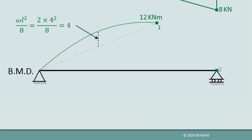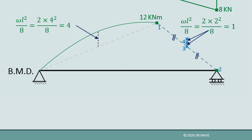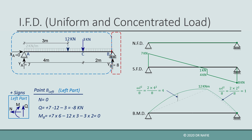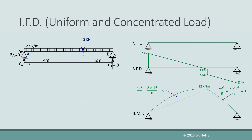Next, we connect the moment at point C with zero at point B using a parabola in the same way as detailed previously. The value of WL²/8 in this case will be calculated as 2 kilonewtons per meter multiplied by the square of 2 meters divided by 8, giving a value of 1 kilonewton meter. After connecting all the calculated values, the final diagrams are produced as shown.